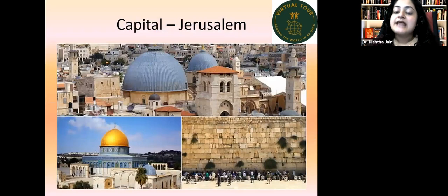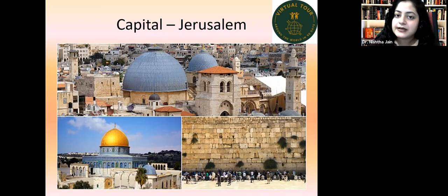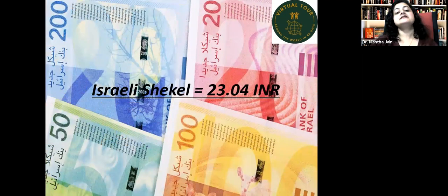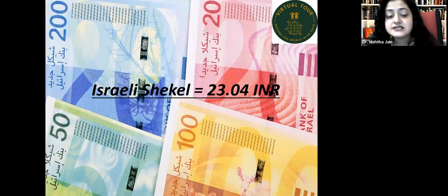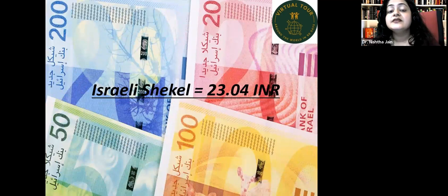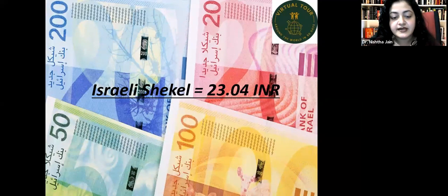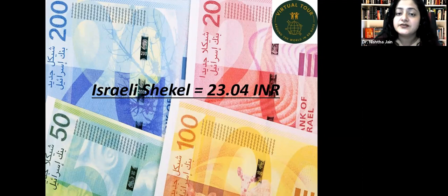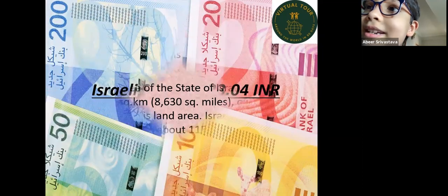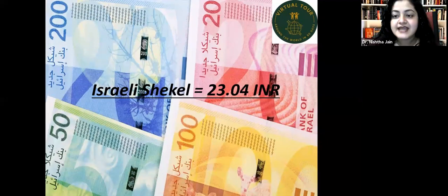The capital of Israel is Jerusalem — a beautiful place. The currency of Israel is called the Israeli shekel, and it is equal to 23.04 Indian rupees. One shekel equals 23.04 Indian rupees.